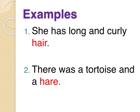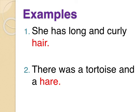Look at the example: 'She has long and curly hair.' Here we are talking about hair — baal ke baare mein baat kar rahe hain. And the second example is: 'There was a tortoise and a hare.' Here we are talking about a rabbit. So see — 'hair' and 'hare' — the pronunciation is the same but they have different spellings and different meanings.